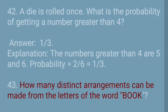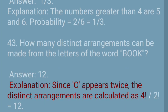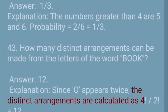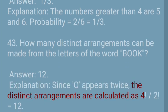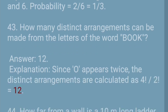Question 43: How many distinct arrangements can be made from the letters of the word 'BOOK'? Answer: 12. Explanation: Since O appears twice, the distinct arrangements are calculated as 4!/2! = 12.